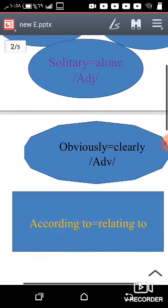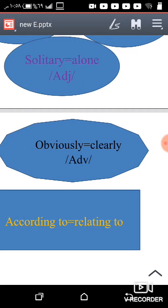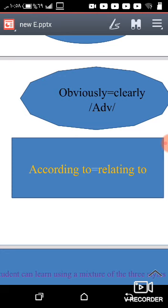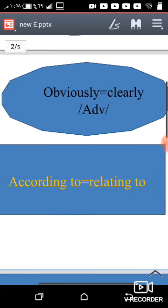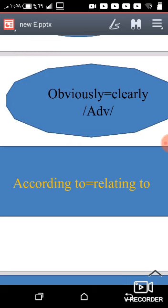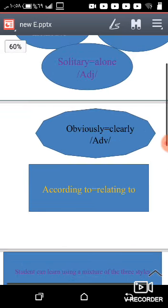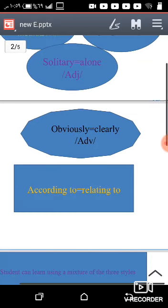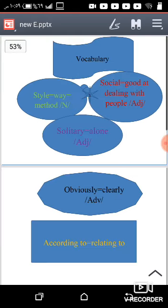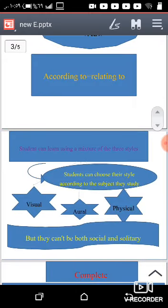Another word: obviously. Obviously means clearly, and this is an adverb. Another one: according to means relating to. So another time: style, social, solitary, obviously, according to. Okay, these are the main vocabulary. Now let's move to the main points in our lesson.